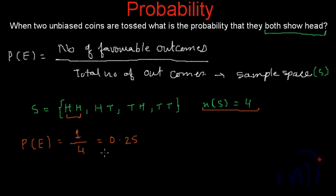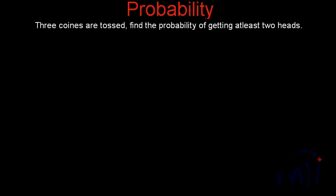Now we are taking one more problem, again related to coins. This is our second question: 3 coins are tossed — find the probability of getting at least 2 heads.